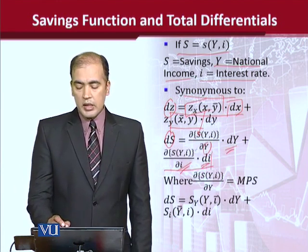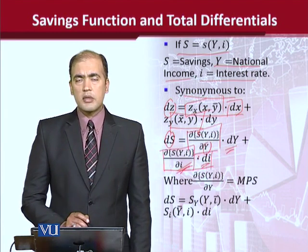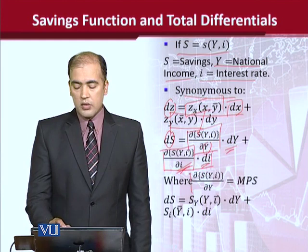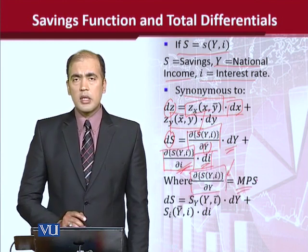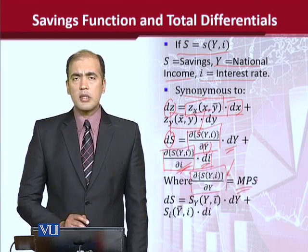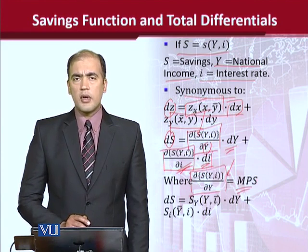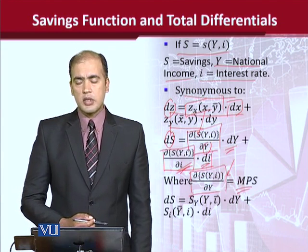For this, we need certain expressions. This derivative needs to be found with respect to each variable. We are going to find the first partial derivative, which we can say is equal to MPS — the marginal propensity to save — because this is the derivative of the savings function.